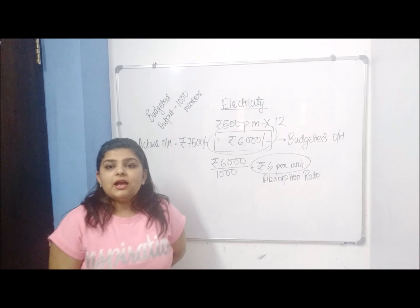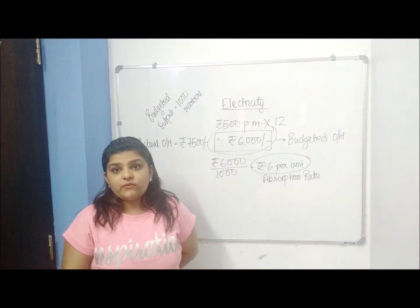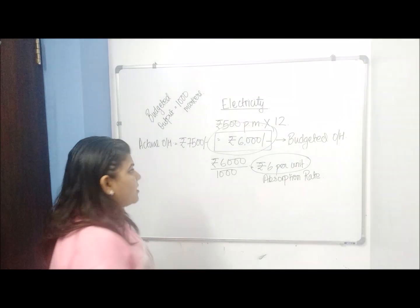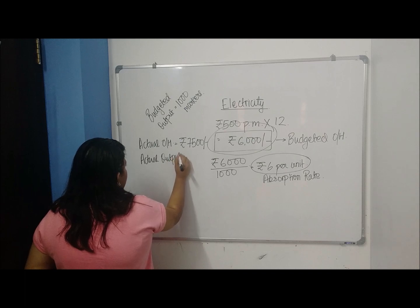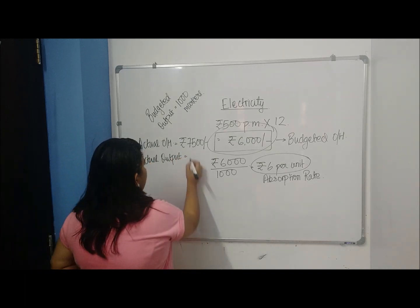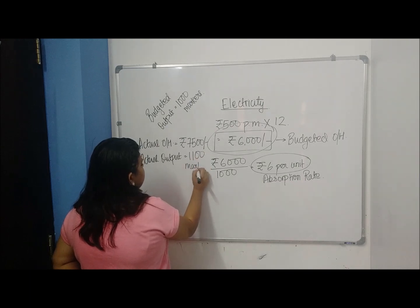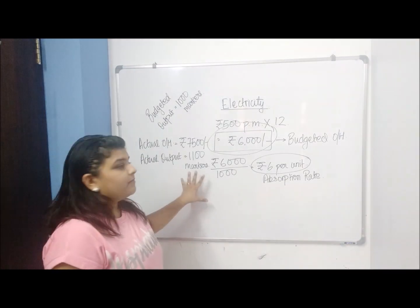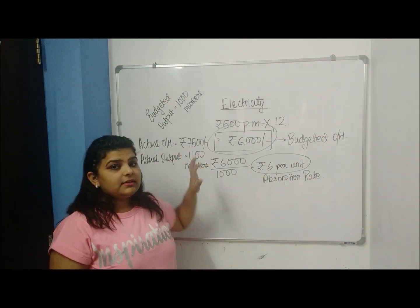I also know the actual output. Obviously I have produced for the whole year and I know how many units I have produced. So I have an actual output as well. Let us say my actual output is 1100 markers. So now I have 1100 markers which I have produced, and the actual overheads is rupees 7,500.